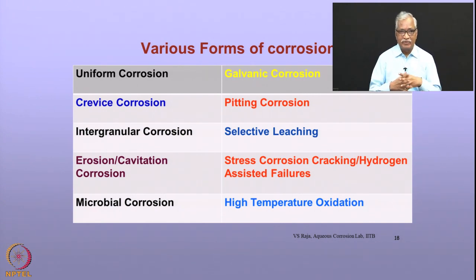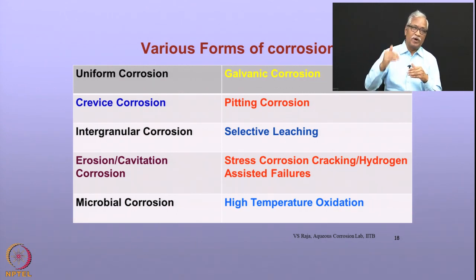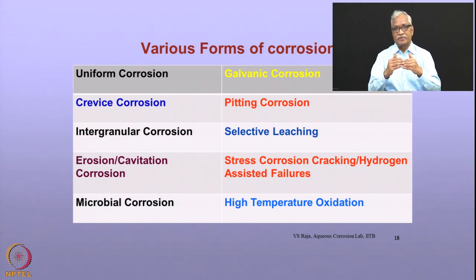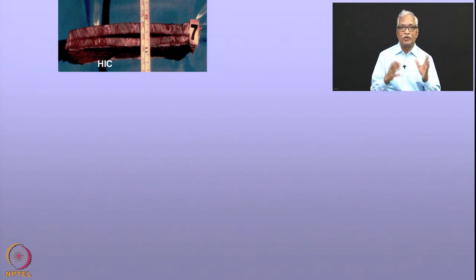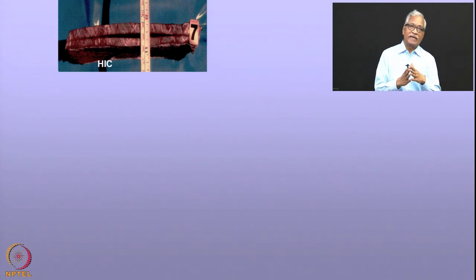There are subdivisions of these forms. For example, hydrogen-assisted failures can include hydrogen blistering, hydrogen embrittlement, and decarburization. What is shown here is hydrogen-induced cracking in a steel structure: corrosion occurs on the surface, hydrogen is liberated, part of it gets into the metal, accumulates and builds up pressure causing mechanical damage. This is a hydrogen-induced failure that happened in one of the refineries.